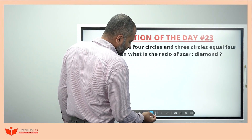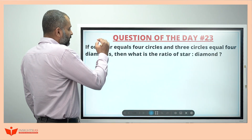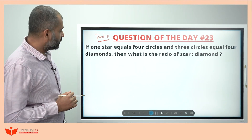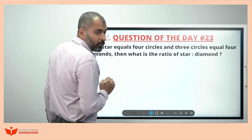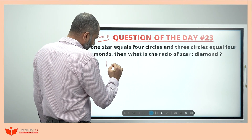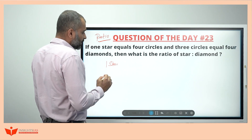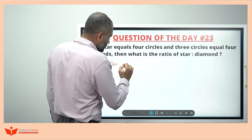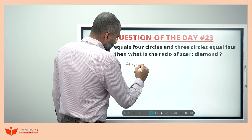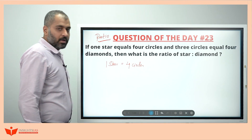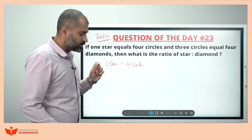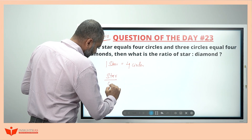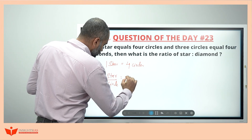As the question itself explicitly indicates, this is from ratio. If one star equals four circles — I am writing whatever is given in the data, extracting and structuring it. One star is equal to four circles. So star divided by circles equals four by one.